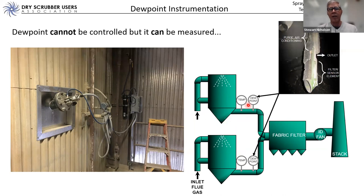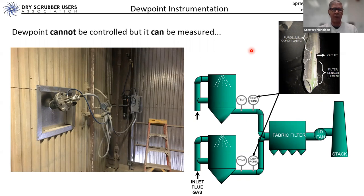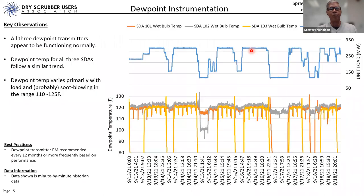Dew point transmitters are commonly located at the outlet of each SDA vessel. Keep in mind the dew point temperature in two parallel SDA vessels may not be the same, because the characteristics of the flue gas entering those vessels may differ — volume, temperature, and other properties. Ideally, dew point temperature is measured individually at the exit of each SDA. Importantly, instrumentation to accurately measure dew point temperature did not exist in SDAs until about 2010–2012.